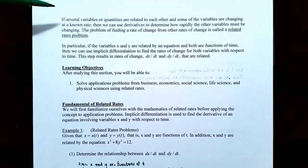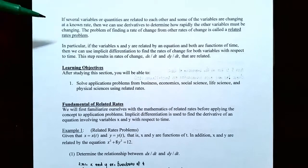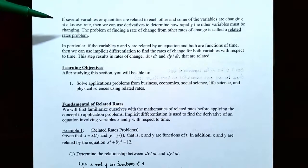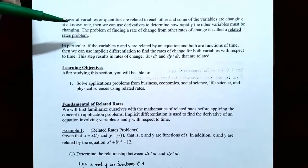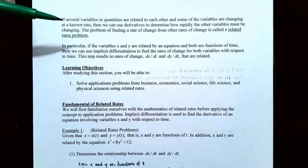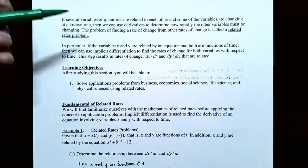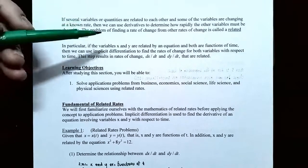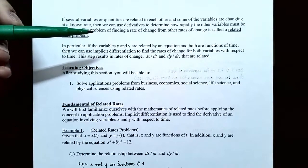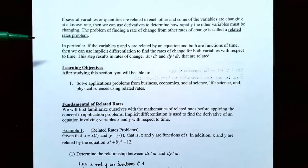If you have several variables or quantities that are related to each other, and some of the variables are changing at a known rate, then we can use derivatives to determine how rapidly one variable changes based on how fast another variable changes. The problem of finding a rate of change from other rates of change is called a related rates problem.